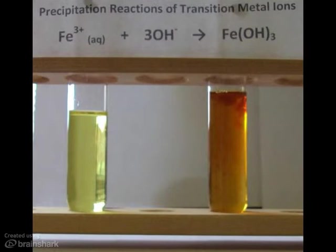If you take the yellow-brown or orange solution of iron 3 plus and add a small amount of hydroxide ions, then you form the orange-brown gelatinous precipitate of iron 3 hydroxide.